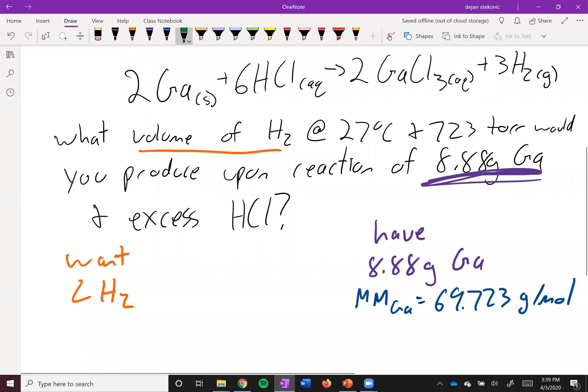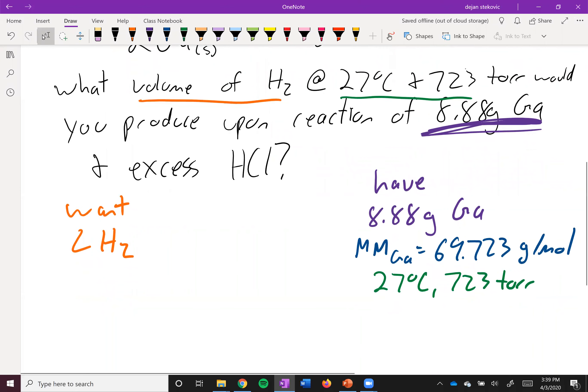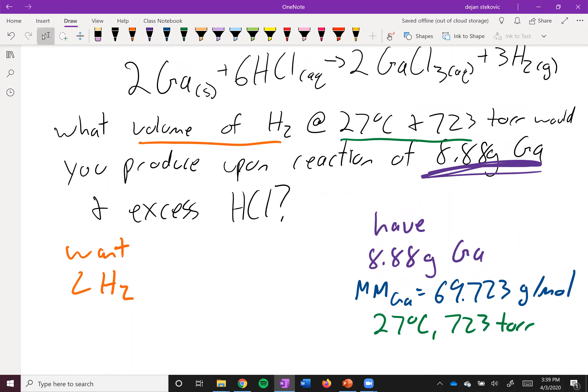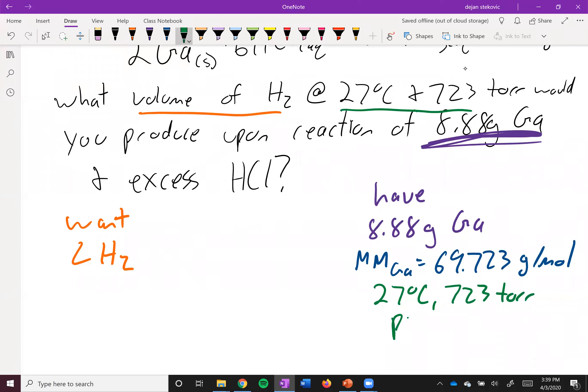And then we're also given 27 degrees Celsius, 723 Torr as well. So I have additional pieces of data. So let's think about how we can use that. Well, we've got temperature. We've got pressure. We want volume. So we can think about a PV equals NRT type of setup and see what we have currently and what we still need to get.